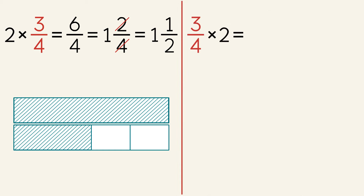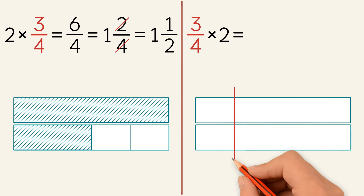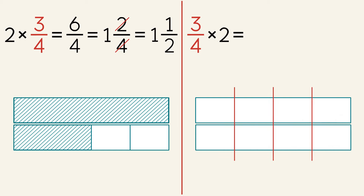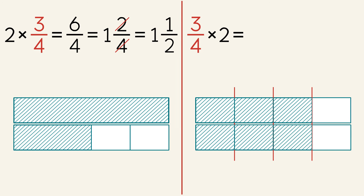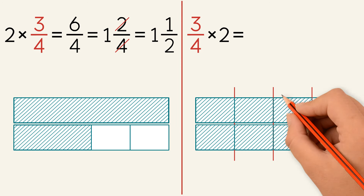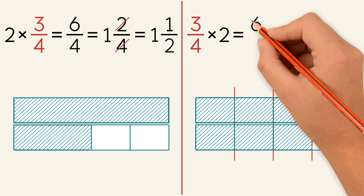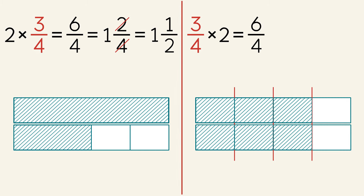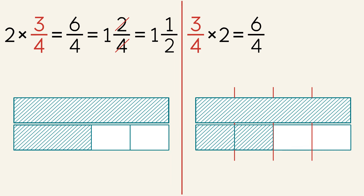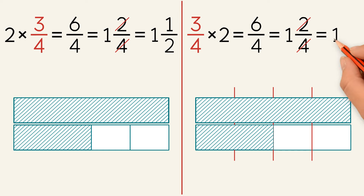Now let's multiply three-fourths by two. This means that we are finding three of four parts of a group of two. We have two groups and we divide the groups into four parts. We shade three of four parts. We have six-fourths filled in, so six is our numerator. The denominator stays the same. We regroup to make a whole, giving us one and two over four. We can simplify two-fourths to one-half, so the final answer is one and one-half.